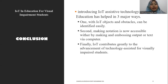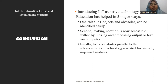This is my conclusion. Introducing IoT accessibility technology has helped in three major ways. First, with IoT, objects and obstacles can be identified easily. Second, making notation is now accessible through the making and embossing of text output via computer. The last point is that IoT contributes directly to the advancement of technology assistance for visually impaired students.